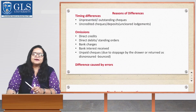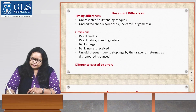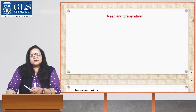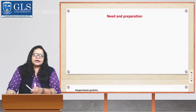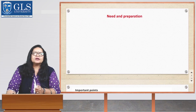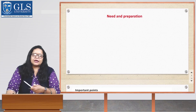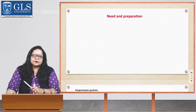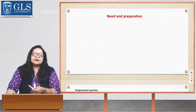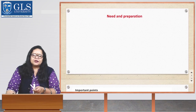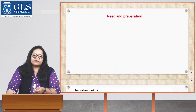Now let us talk about the need for a Bank Reconciliation Statement. It is important to compare the bank statement and the bank column of the cashbook. If the two balances do not match, it is necessary to reconcile them to explain why the differences have occurred. It may be prepared every week, every month, or on a daily basis, depending upon transactions done with the bank. The purpose of the BRS is to update the cashbook with items appearing in the bank statement such as bank charges, interest charges, and dishonored checks, and to make adjustments for any errors in the cashbook.